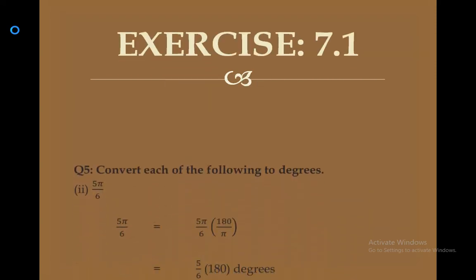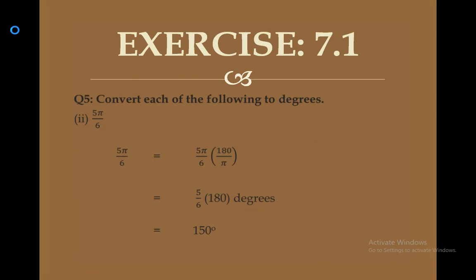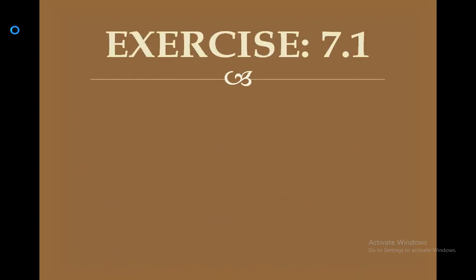Question 5: convert each of the following to degrees. To convert radians to degrees, multiply by 180/π. Part 2 is 5π/6: multiply by 180/π — π cancels, 180 and 6 cancel to give 30, and 30 × 5 = 150 degrees. Part 5 is 3 radians: multiply by 180/π using a calculator, giving 171.8182 degrees.